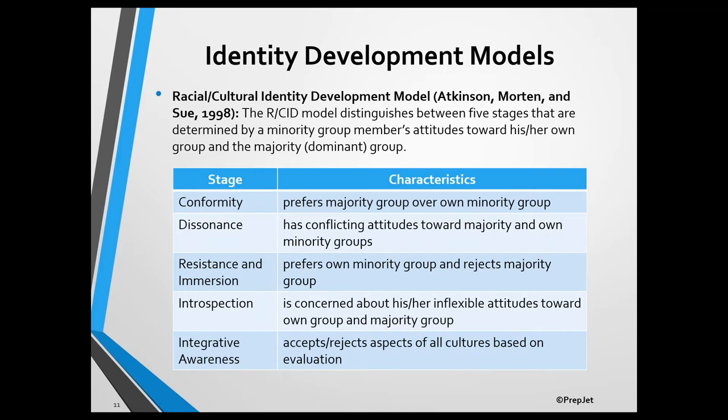It distinguishes between five stages of identity development that differ in terms of how members of racial and cultural minority groups view members of their own minority group and the majority group. People in the conformity stage have either neutral or negative attitudes toward members of their own minority group and positive attitudes toward members of the majority group.